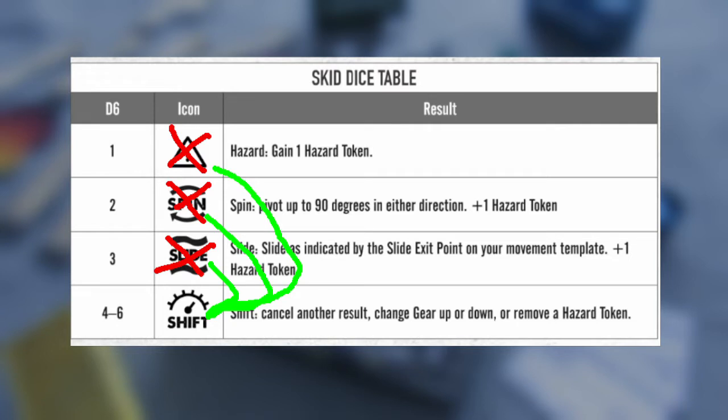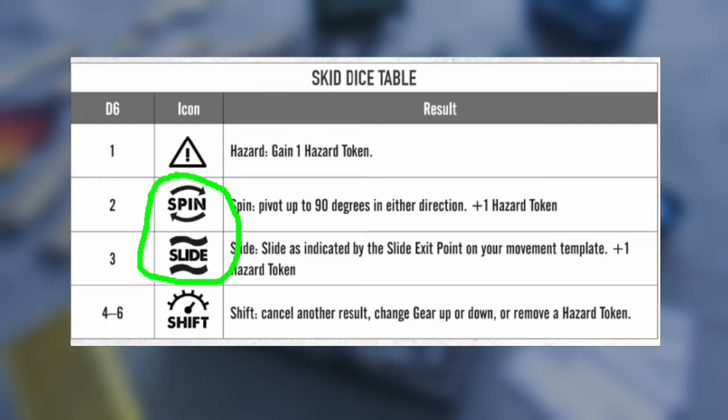Overall, they're pretty good to get, and you want them in your rolls most of the time. However, these two other results, spin and slide, are how you get fancy with your driving. They can be occasionally very useful, unlike this other result, which is the hazard result. That's only really something you want to see under really specific circumstances.